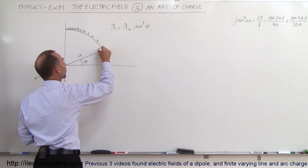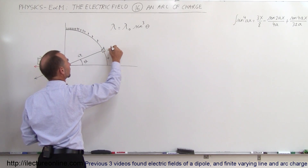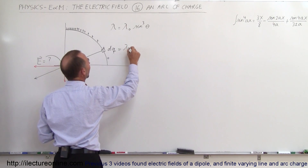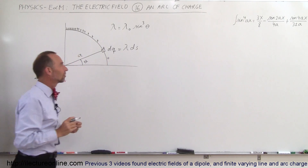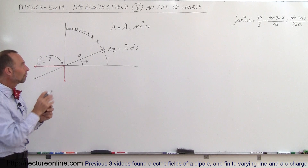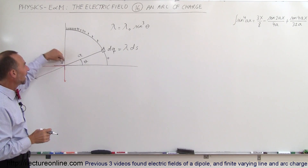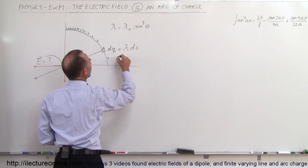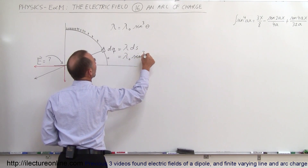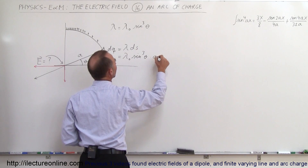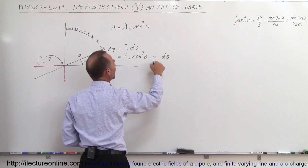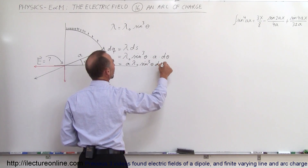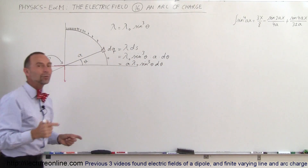The best way to handle that is to start with a small charge element dq. The dq is going to be equal to the linear charge density lambda times ds, a little arc length ds. And ds is going to be expressed as a·dθ, where a is the radius and dθ is the small angle element. So this can be written as lambda sub nought times sine cubed of theta times a times dθ, which simplifies to a·λ₀·sin³(θ)·dθ — the small charge element anywhere along the arc, as a function of theta.